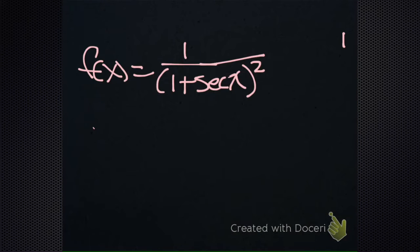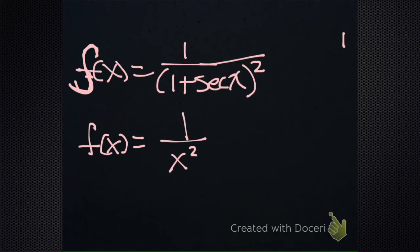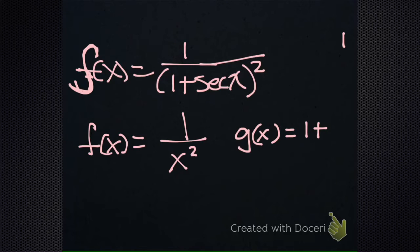So what's my f? I should have used a different letter — this is s, and we're looking for ds. Anyway, our f, our outside function — what's that? It's 1 over x squared. And then we look at the inside function, our g. What's our g going to be? That's 1 plus the secant of x.